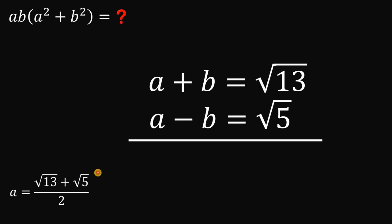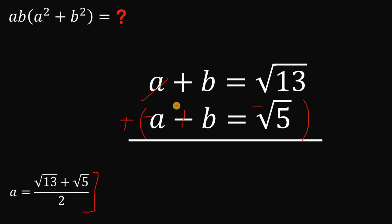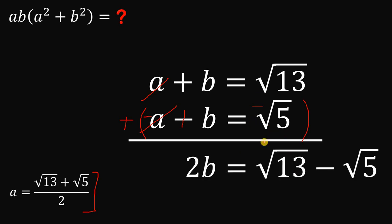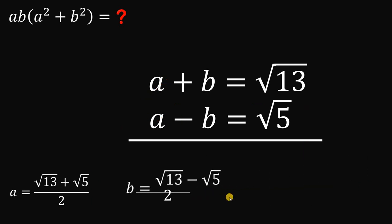Now let's solve for b. Instead of adding, we subtract the second equation from the first. The a terms cancel out, leaving 2b equals the square root of 13 minus the square root of 5. Dividing both sides by 2, the value of b is square root of 13 minus square root of 5, all over 2.